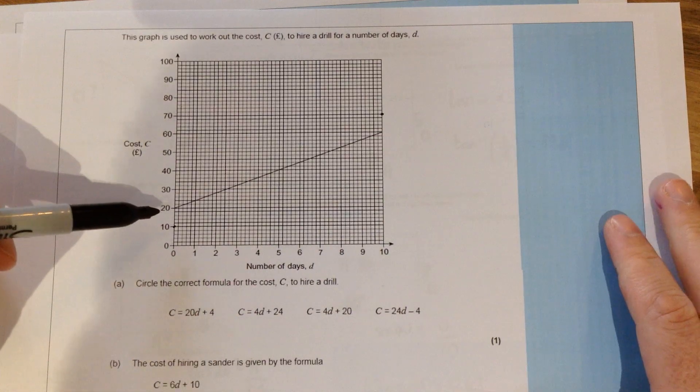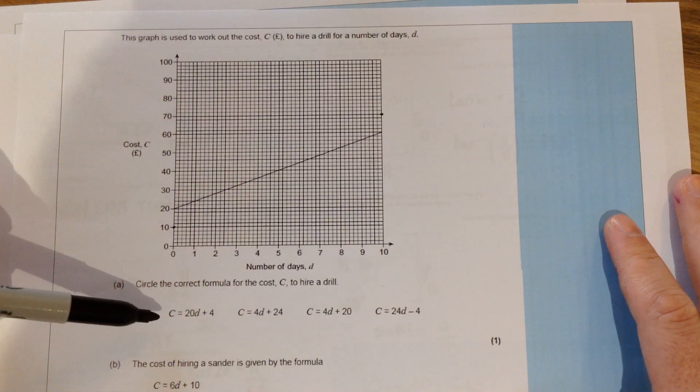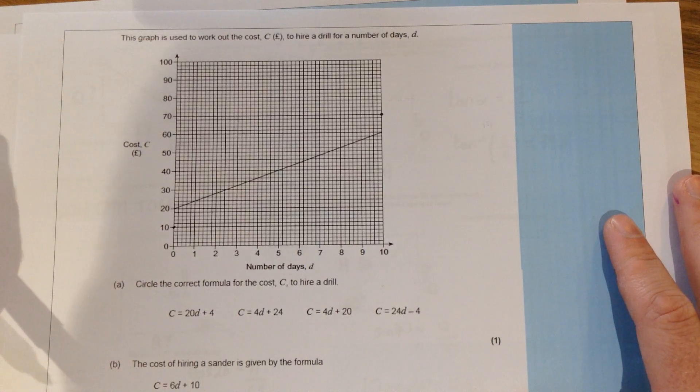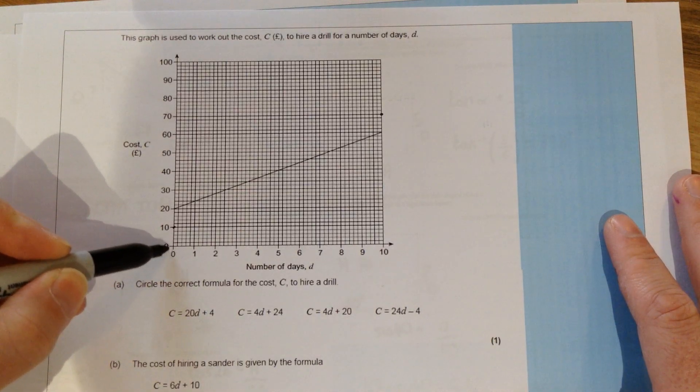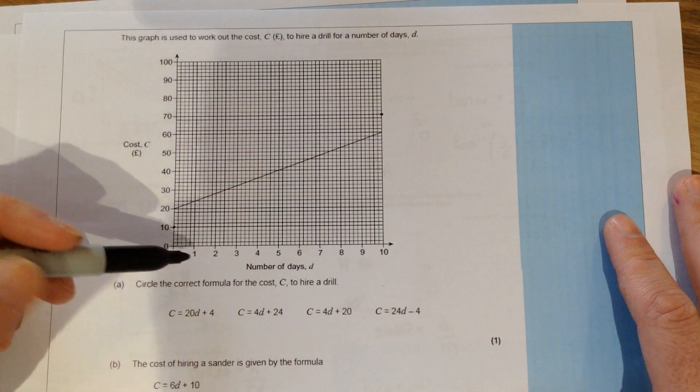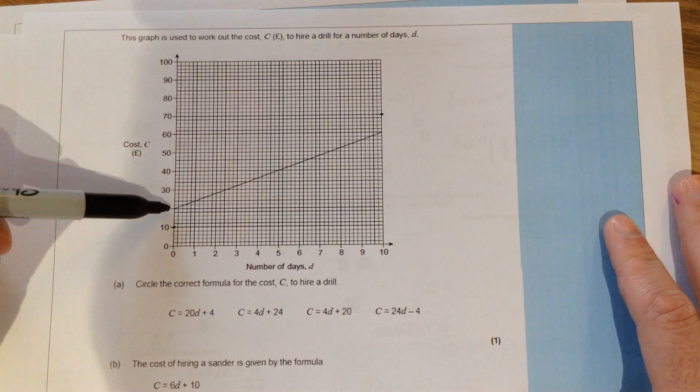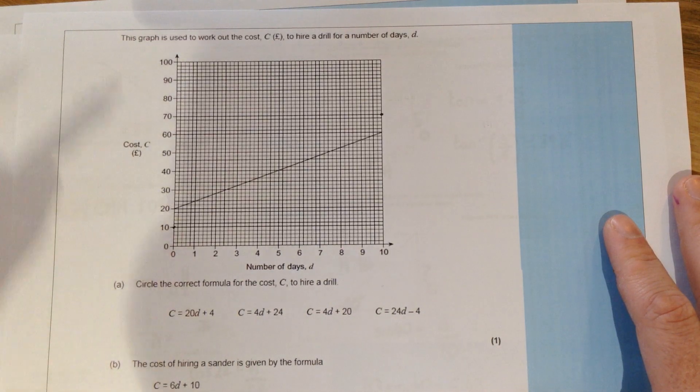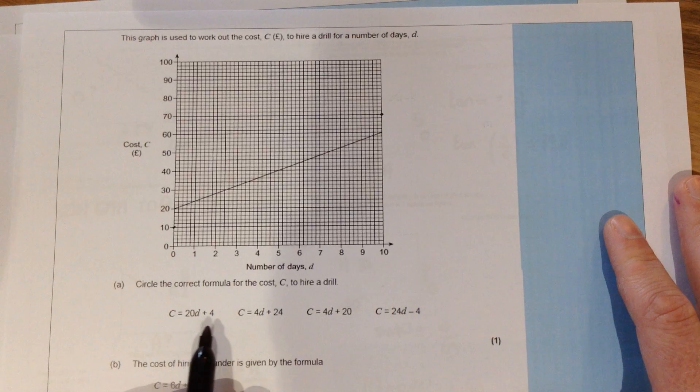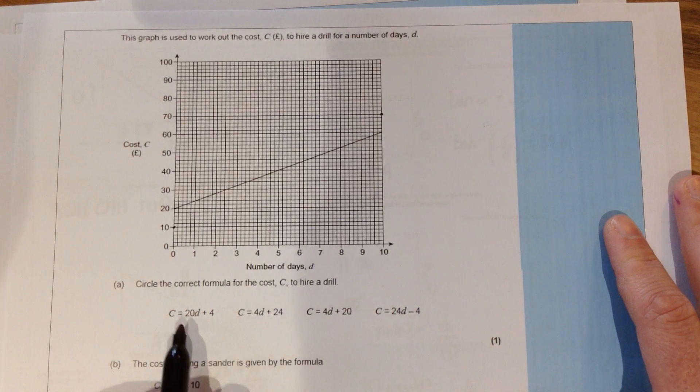Well the way that we do this, if C relates to cost and D is a number of days, the first thing I would look at is if there were zero days. We didn't rent in this case a drill. If we didn't rent it at all, okay so zero days, the cost would still be 20. So here I'm going to scan through and actually look for the one that if D was zero what the cost would be.